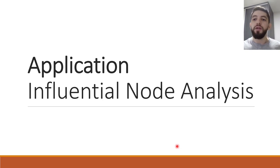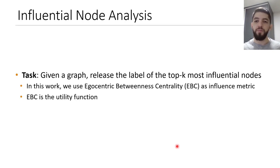To show the accuracy of our approach, we apply the local dampening mechanism to the influential node analysis application. The task is, given a graph, we would like to release the label of the top-k most influential nodes. Specifically, we use betweenness centrality as centrality metric and also as the utility function.